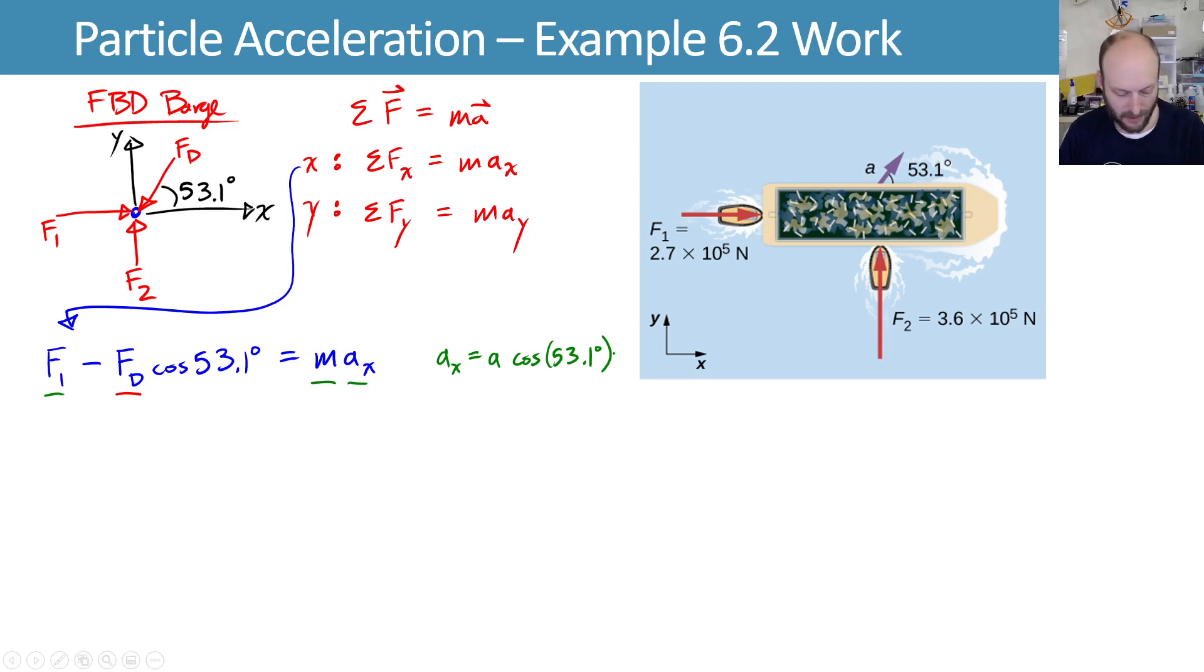Now we can solve for the thing we want to know. We want to know fd, so we will try and isolate fd. We can think about this as subtracting f1 from both sides and dividing by a negative 1 so that we can try and get fd by itself, or you can think about adding fd to the other side, however you want to do it,